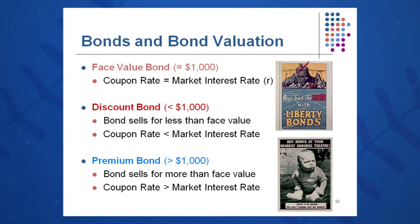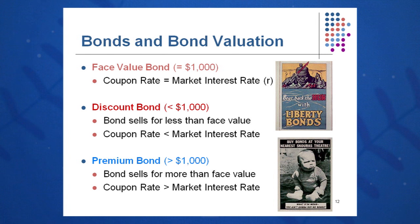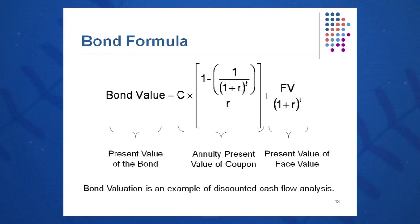A discount bond is where you might sell your bond during the 30 years and get less than $1,000, because market interest rates have gone above your coupon rate. Your bond always pays $80, but if rates go above 8%, people will buy other bonds paying 9% or 10%, so you'd get less than $1,000. A premium bond sells for greater than $1,000 — where interest rates have gone down to, say, 6%, making your 8% bond worth more. The formula is: bond price = C × [1 − 1/(1+R)^T] / R + Face Value / (1+R)^T.